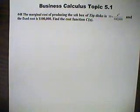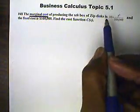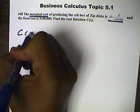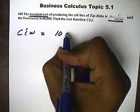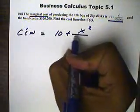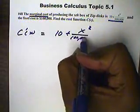We're trying to find the cost function C. First of all, we're dealing with the marginal cost. So this right here represents the marginal cost. The marginal cost is the derivative of the cost function, and that equals 10 plus x squared all over 100,000.